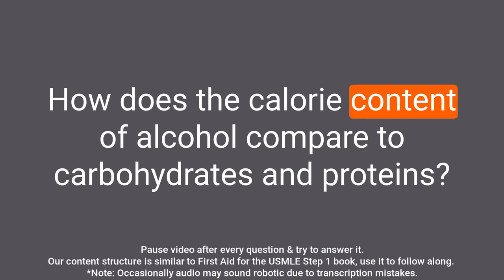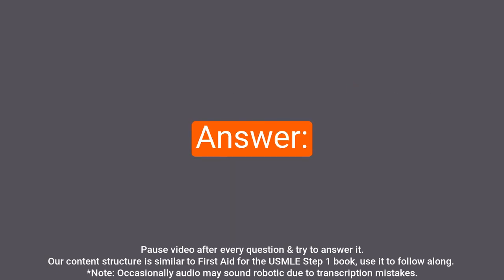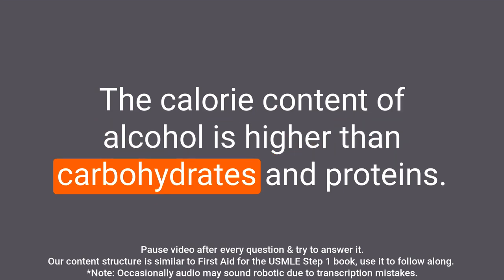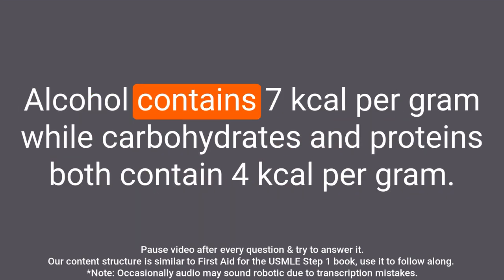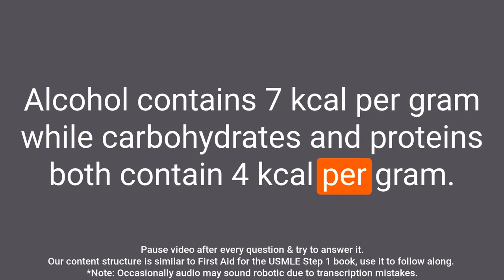Question: How does the calorie content of alcohol compare to carbohydrates and proteins? Answer: The calorie content of alcohol is higher than carbohydrates and proteins. Alcohol contains 7 kcal per gram while carbohydrates and proteins both contain 4 kcal per gram.